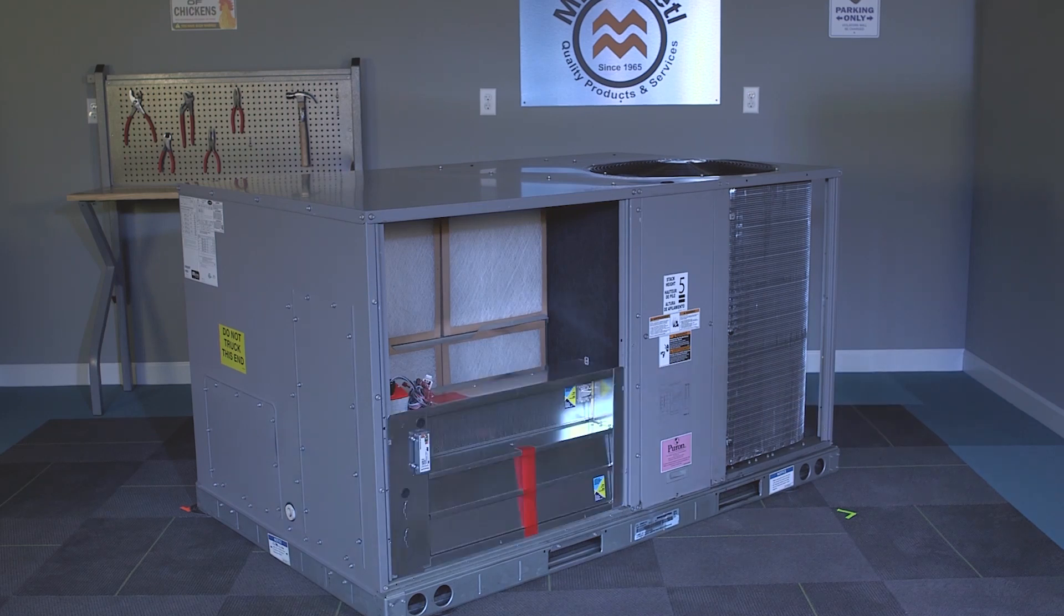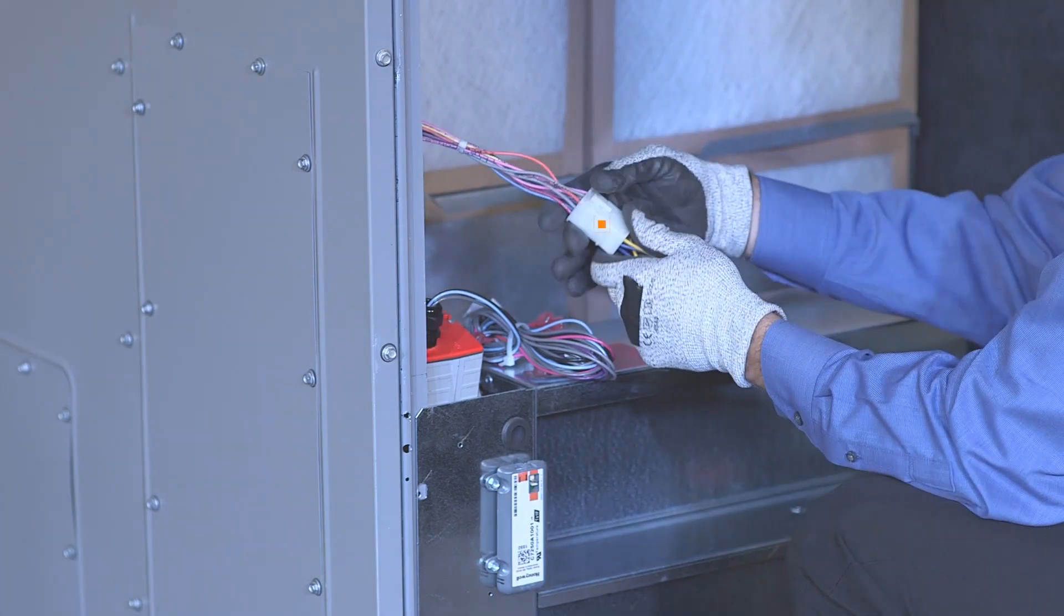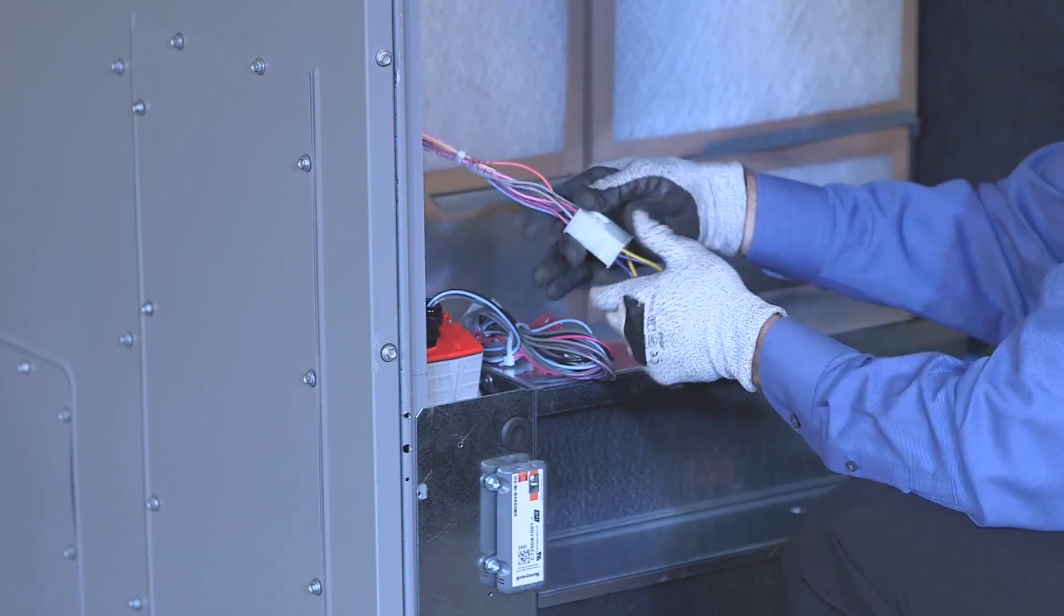Install the economizer over the return air opening. Remove the factory jumper plug from the 12-pin harness and plug the factory 12-pin plug into the economizer female plug.